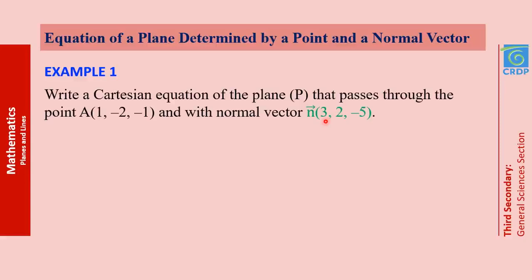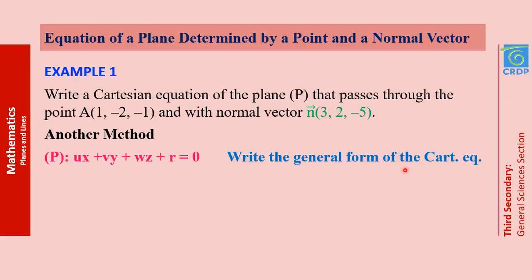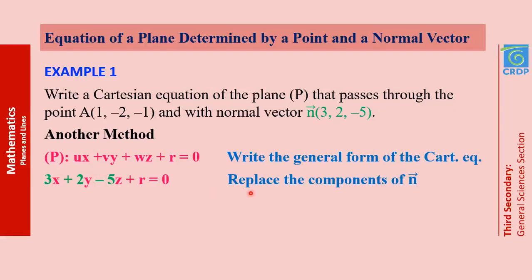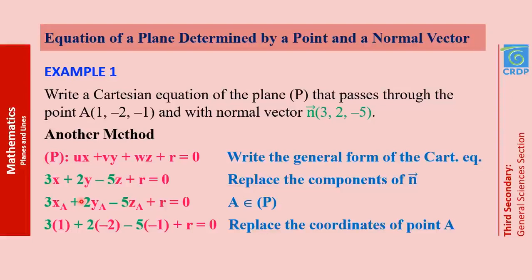We are still in the same example, but now we'll see another method. We write the general form of the Cartesian equation: ux + vy + wz + r = 0. We replace the components of the normal vector: u by 3, v by 2, and w by −5. To calculate r, we use belonging — because A belongs to P, we substitute the coordinates of point A into the equation. We get r = −4, and the equation of P is 3x + 2y − 5z − 4 = 0.